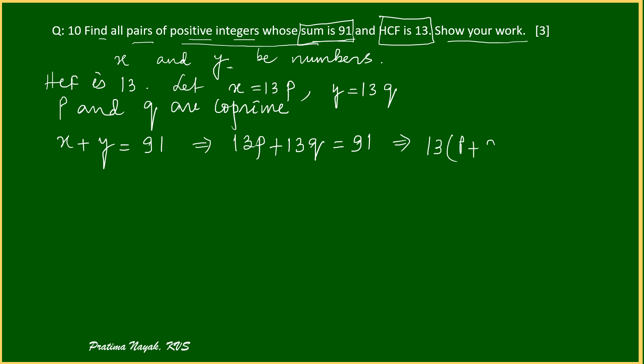That means if I will take common 13, then P plus Q is equal to 91 divided by 13, that will be 7.